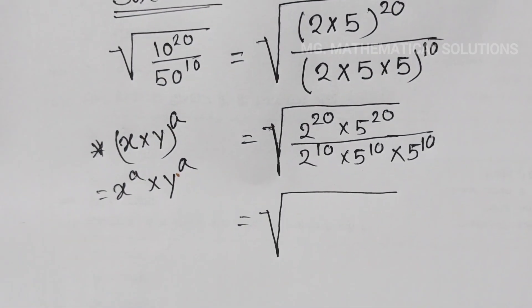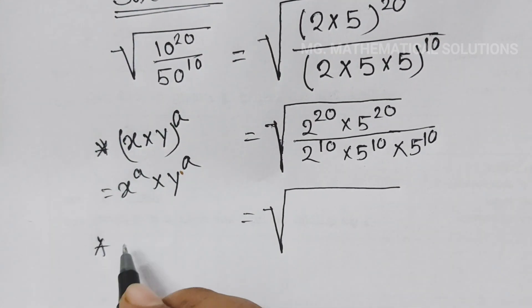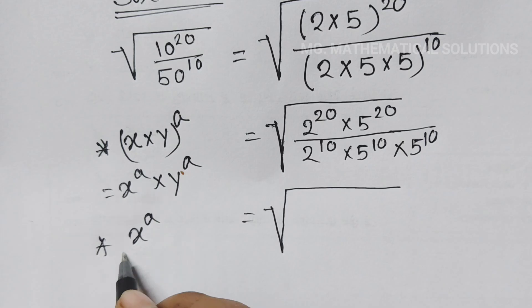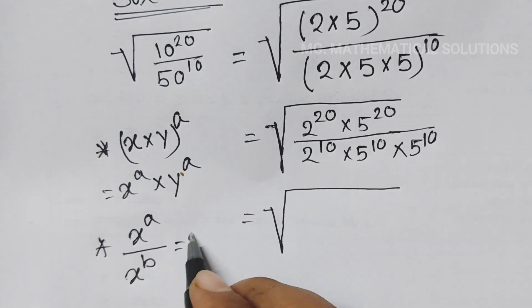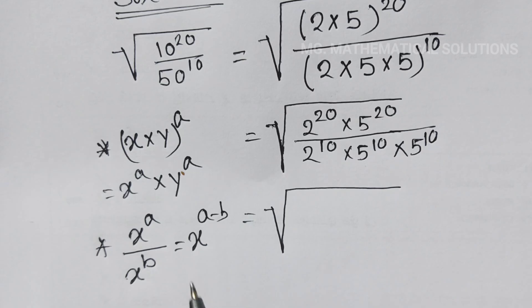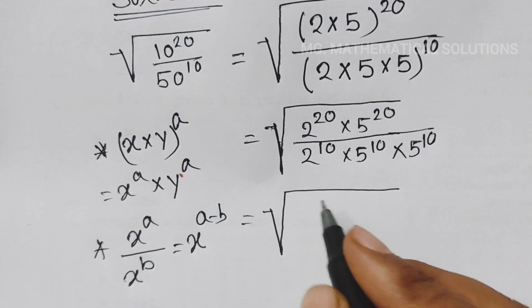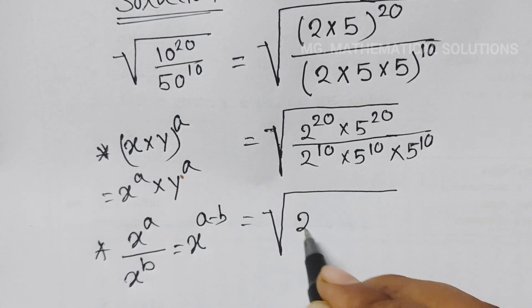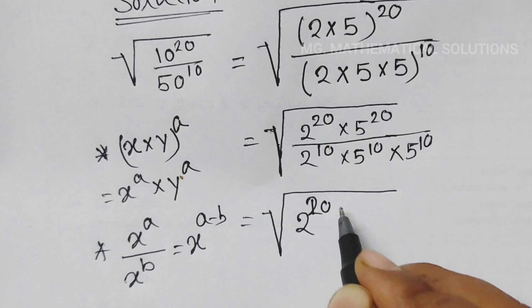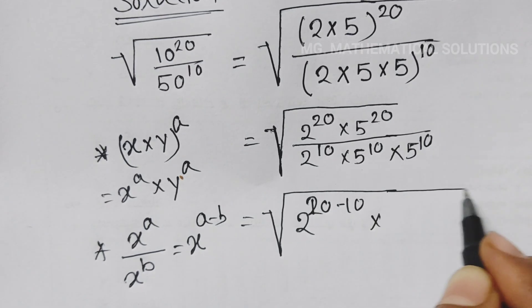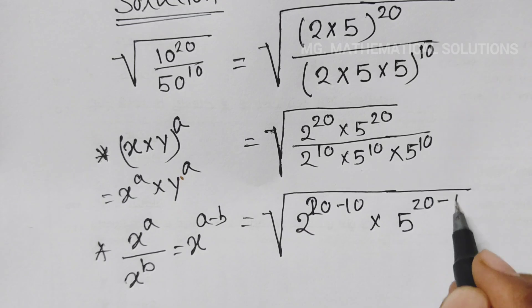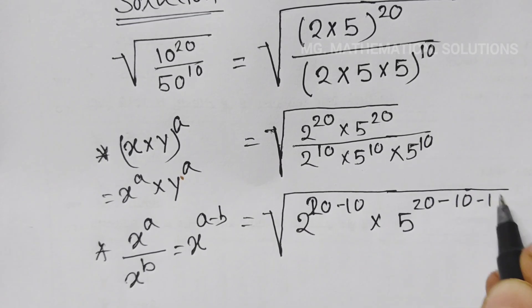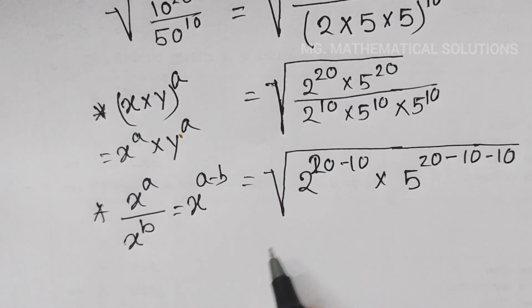Now we use the formula: x to the power a divided by x to the power b equals x to the power (a minus b). So here, 2 to the power 20 minus 10 times 5 to the power 20 minus 10.